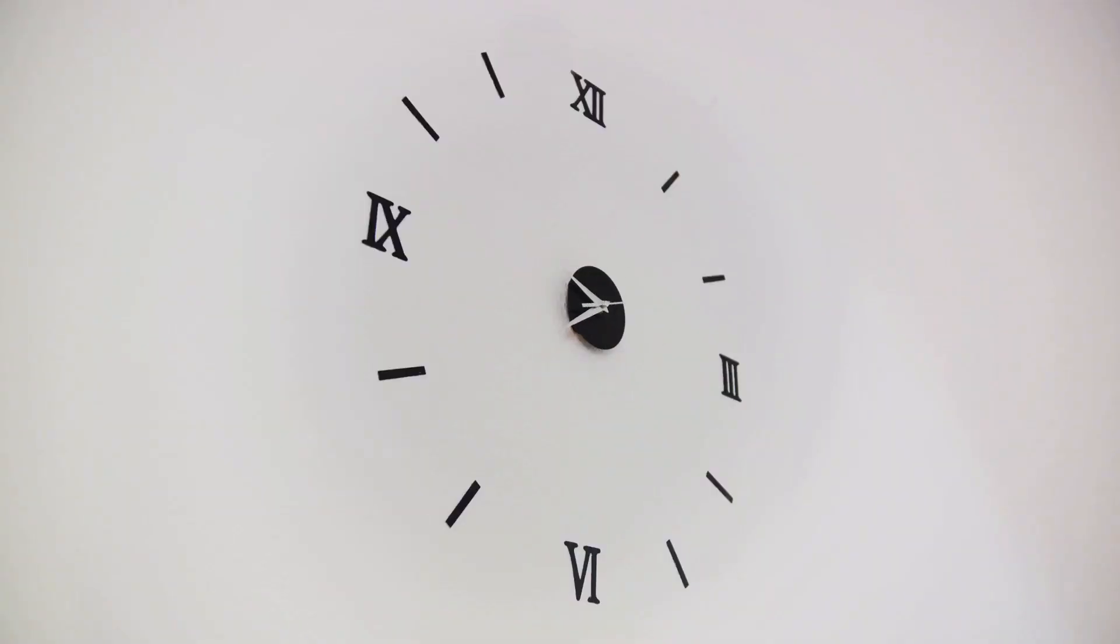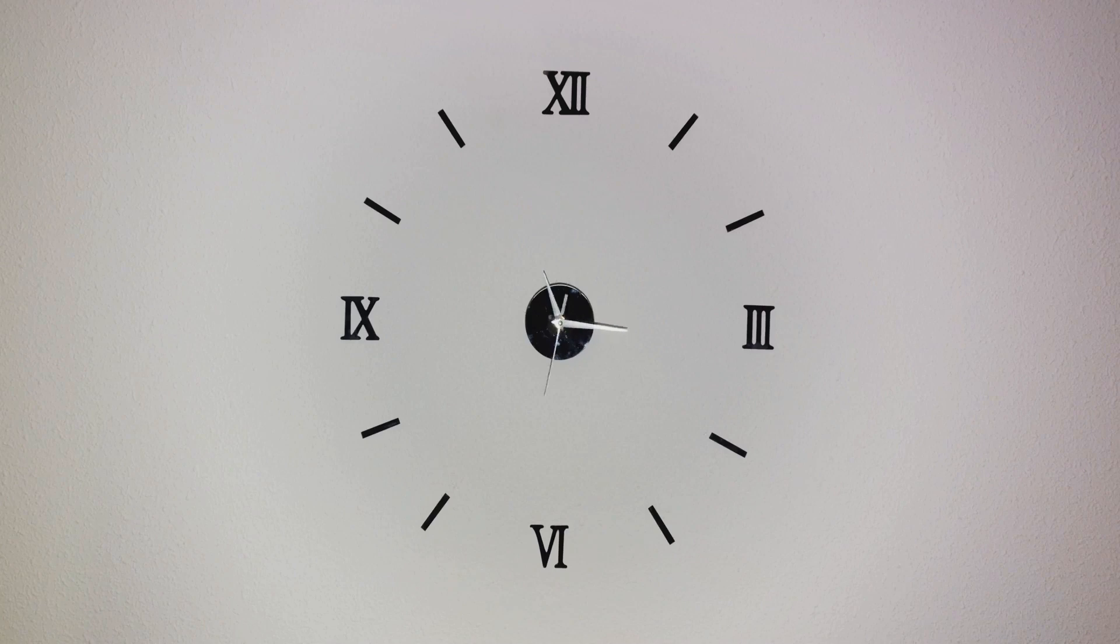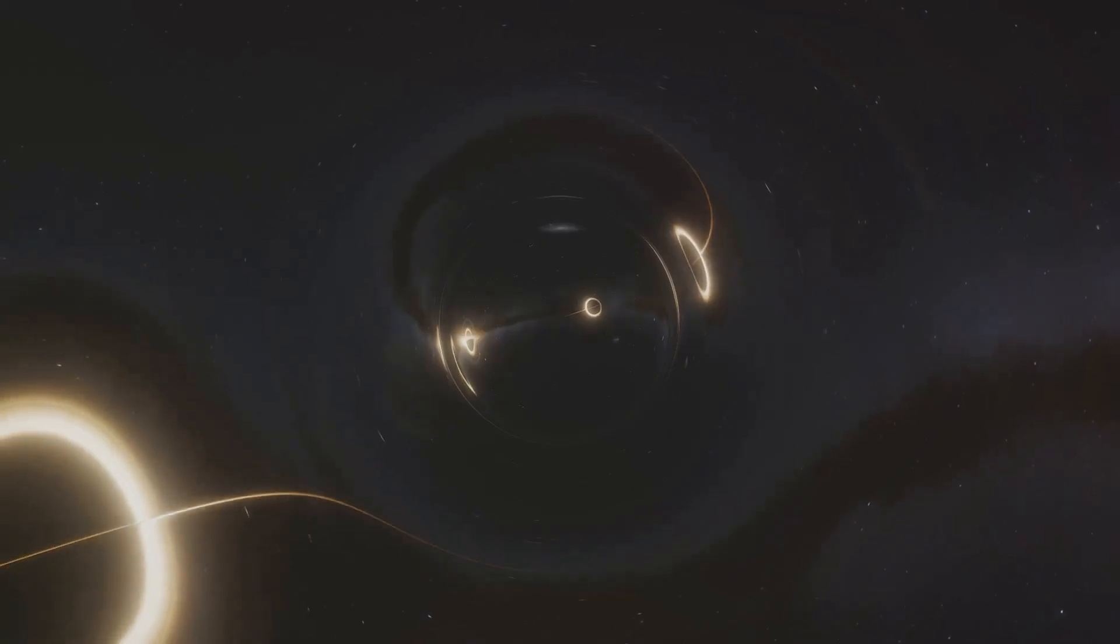In the context of relativity, time is seen as a dimension, much like length, width, and height. But unlike these spatial dimensions, time has a peculiar quality. It can dilate or stretch depending on how fast you're moving or how much gravity is present. This is known as time dilation.